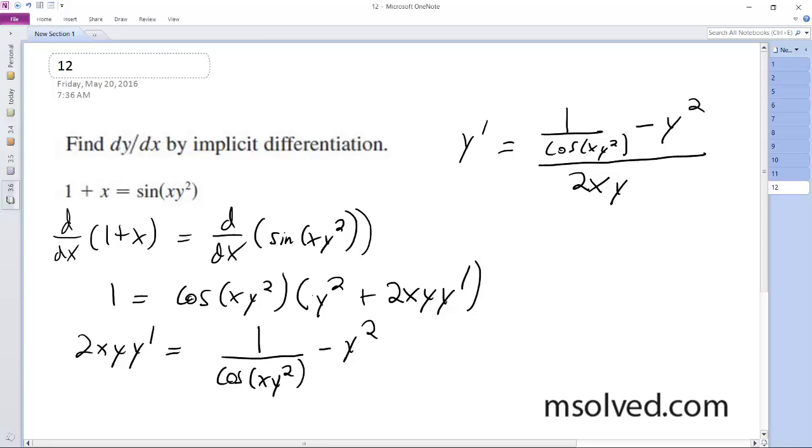So we can turn this into y prime is equal to 1 minus y squared cosine x, y squared divided by 2xy. Basically just moving this up. And then this got the denominator on top to make it equal cosine of x, y squared. That's it.